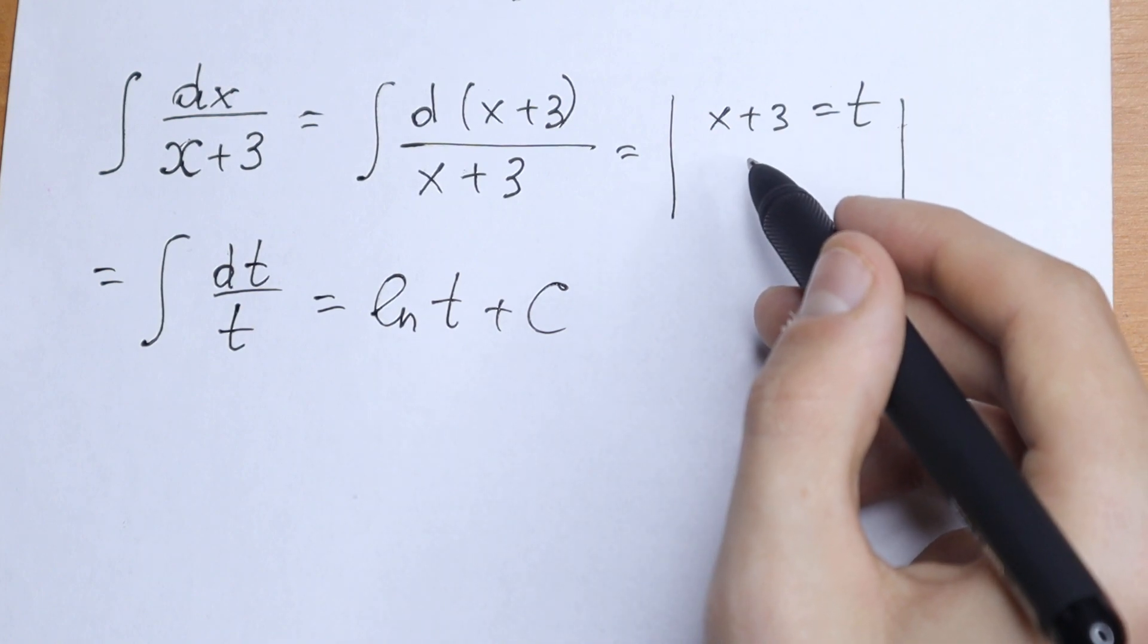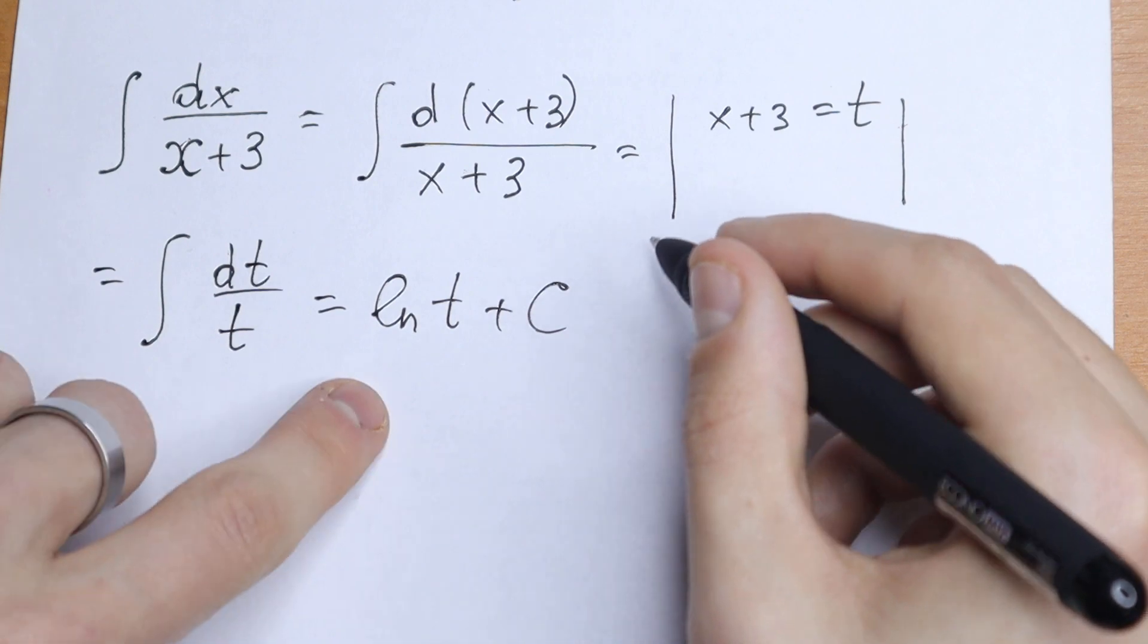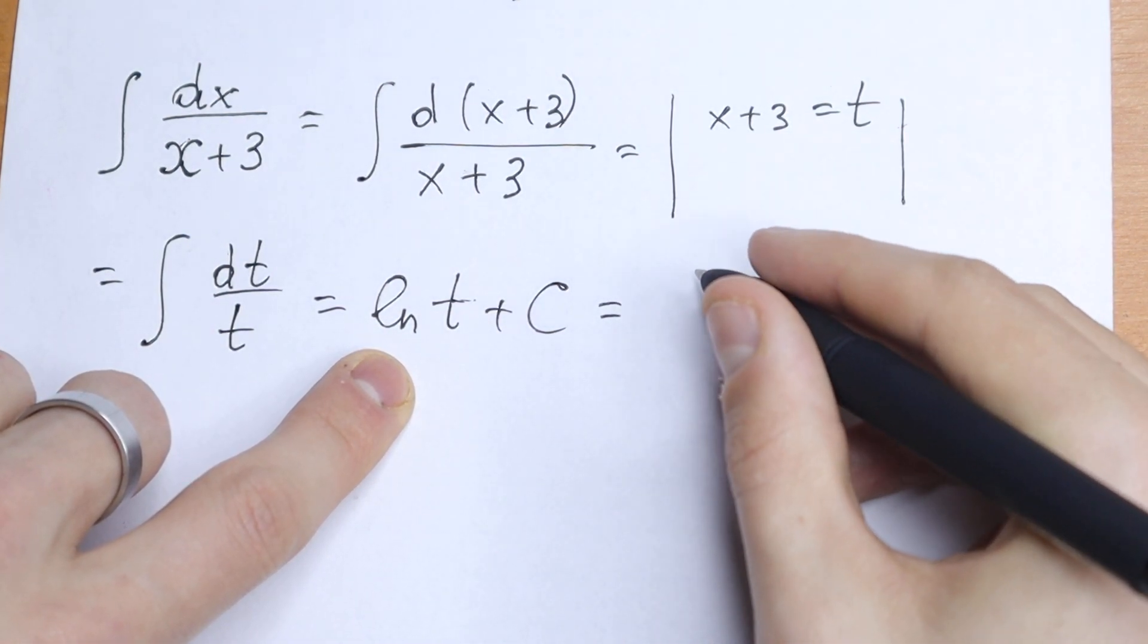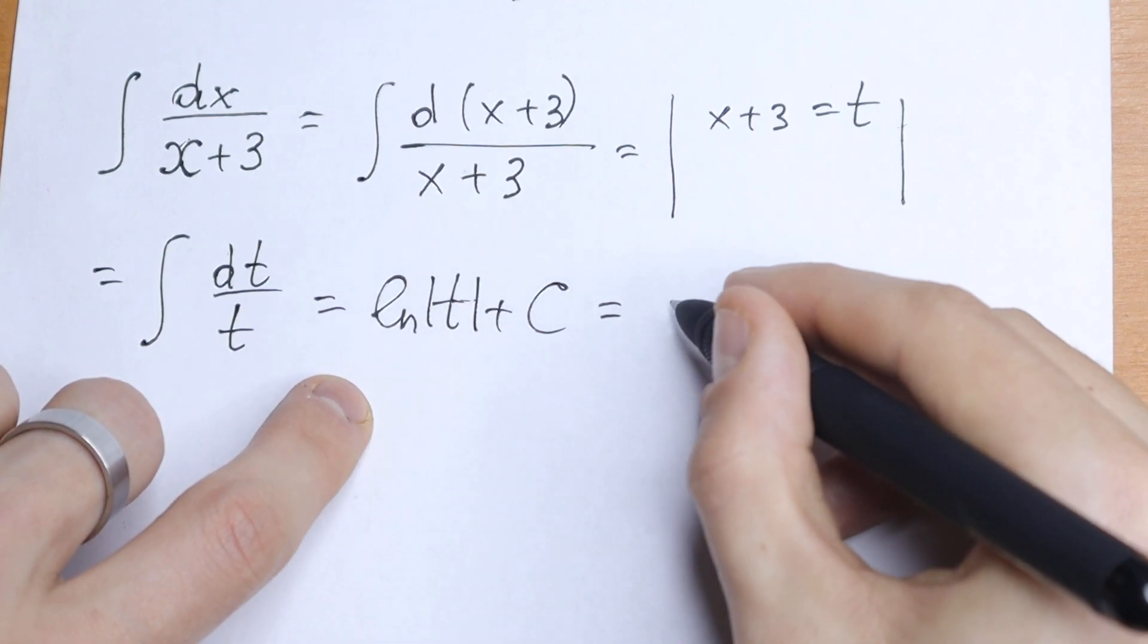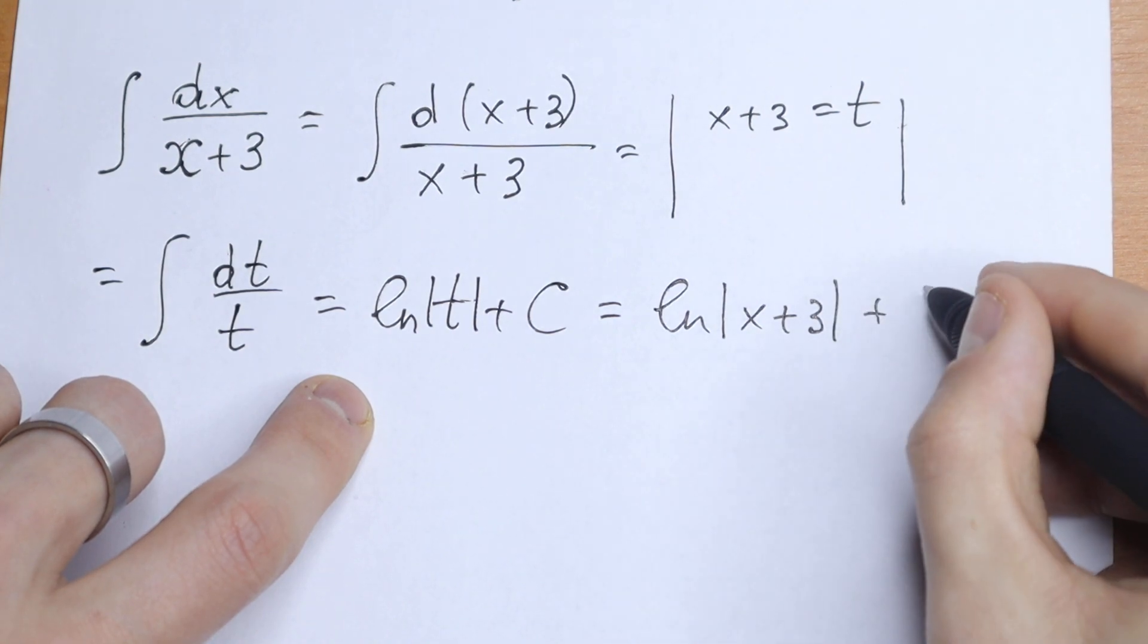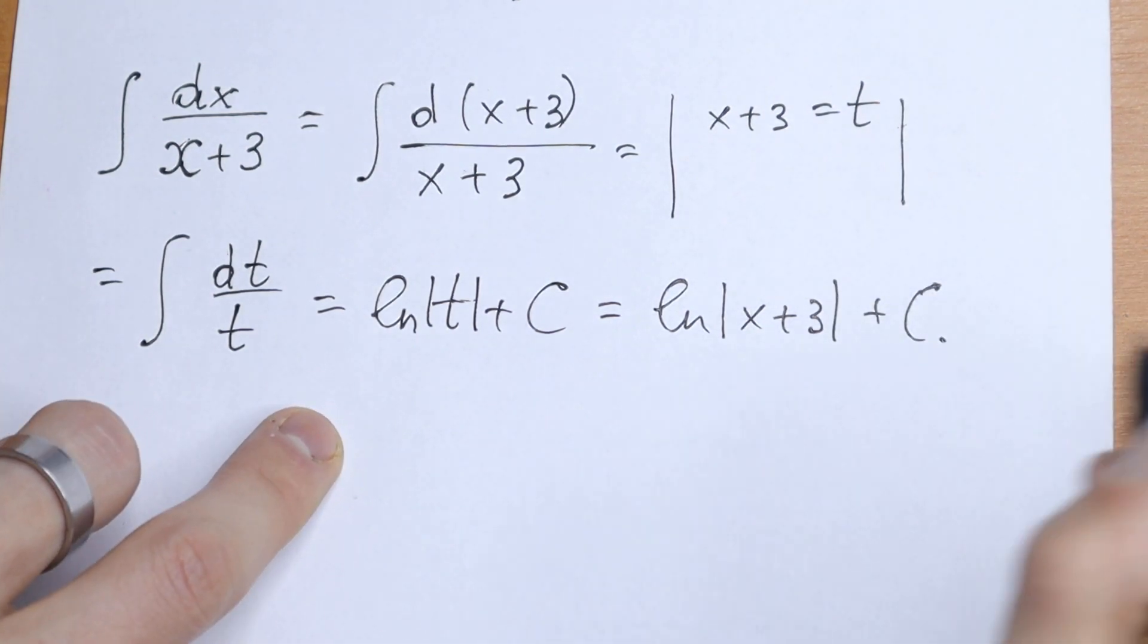But we had a substitution x plus 3 equals t, so we need to change this t back to x plus 3. As a result, our integral equals natural log of the absolute value of x plus 3 plus c. This is our answer.